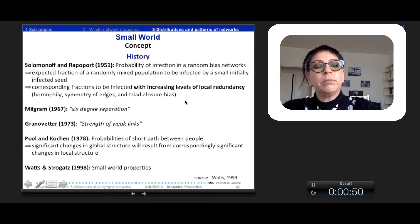And so they found that the corresponding fraction of infected nodes increased with local redundancy. And so this local redundancy is explained by homophily, by symmetry of ages, by triad closure bias. And so they underlined this kind of patterns also of properties. Milgram, also with the 6 degree separation experience, also underlined the fact that our world has got very short paths between people and it is another property of the small world.